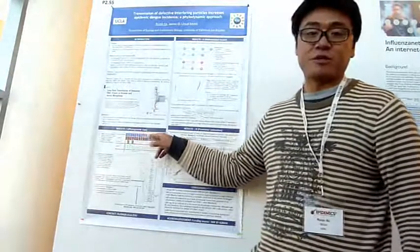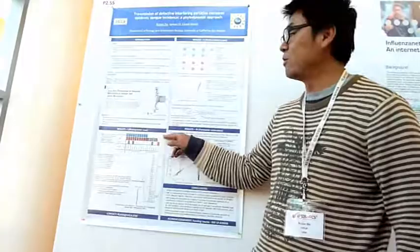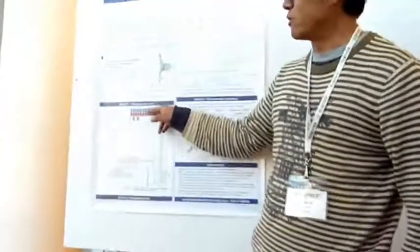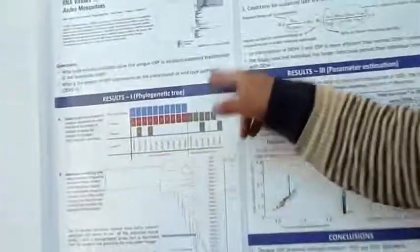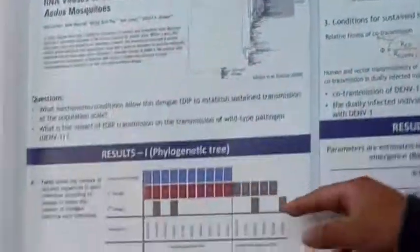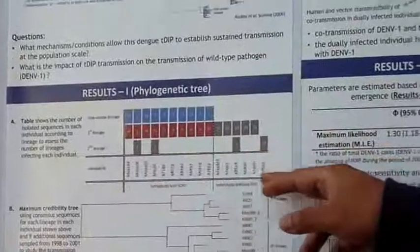The stock-per-down lineage, which is the defective interfering particle shown in blue, the first lineage, which is the big tree here shown in the second row, and another second variant lineage.